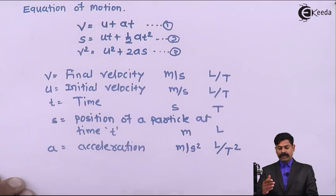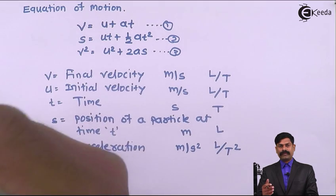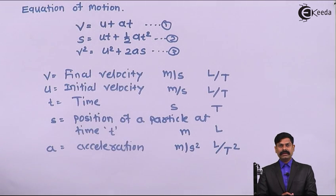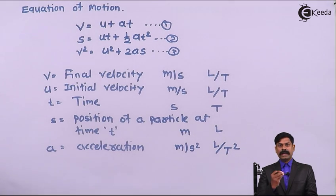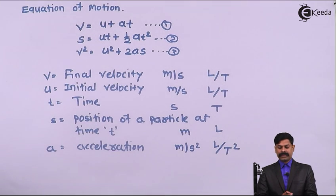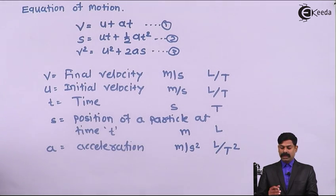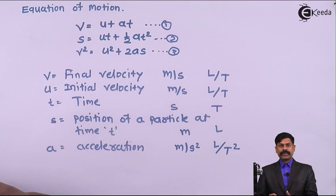We will use these equations to find out the final position of the particle when initial velocity and time are given. We can also find out the distance covered by a particle travelling in a straight line, or when the final velocity and initial velocity are given. Based on these equations of motion, we will now cover an example.